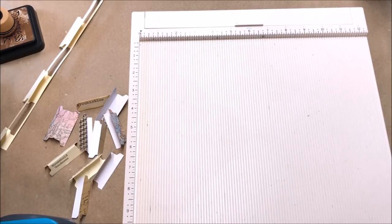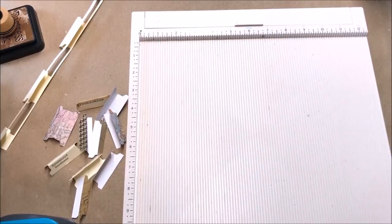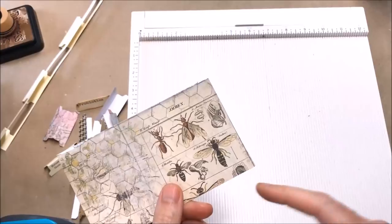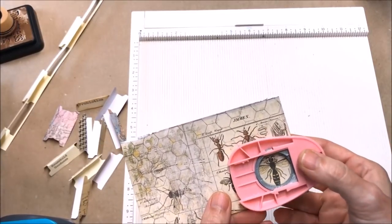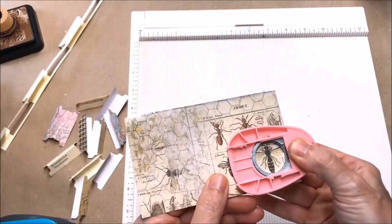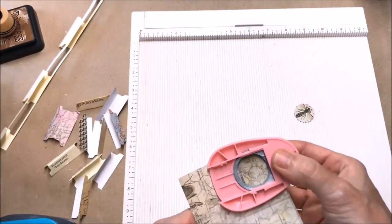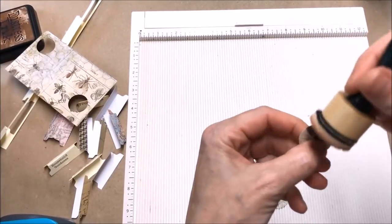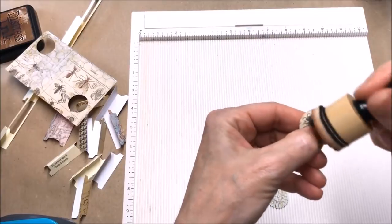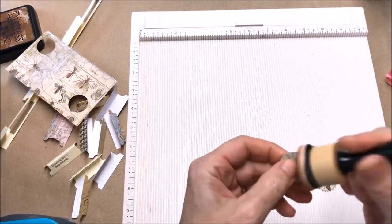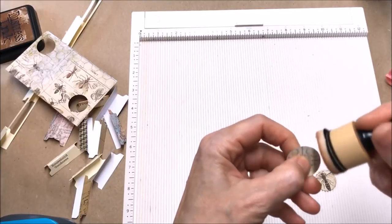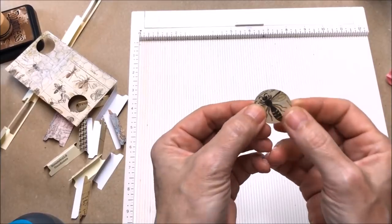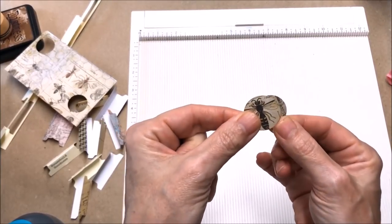So I found this Tim Holtz scrap in my pile and there's a great scientific picture of a bee there. What I'll do is just distress this up, and I cut a piece for the backside. I will just glue these together on each side of the page to make her bee tab.